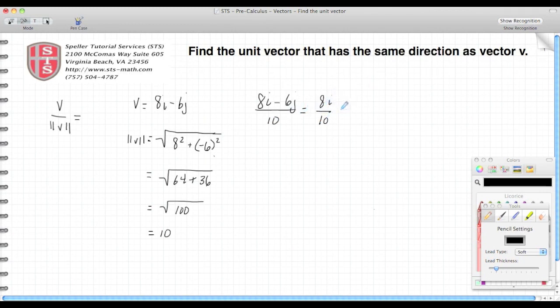8i over 10 minus 6j over 10. This becomes 4i over 5 minus 3j over 5. So this here is the unit vector that points in the same direction as V.